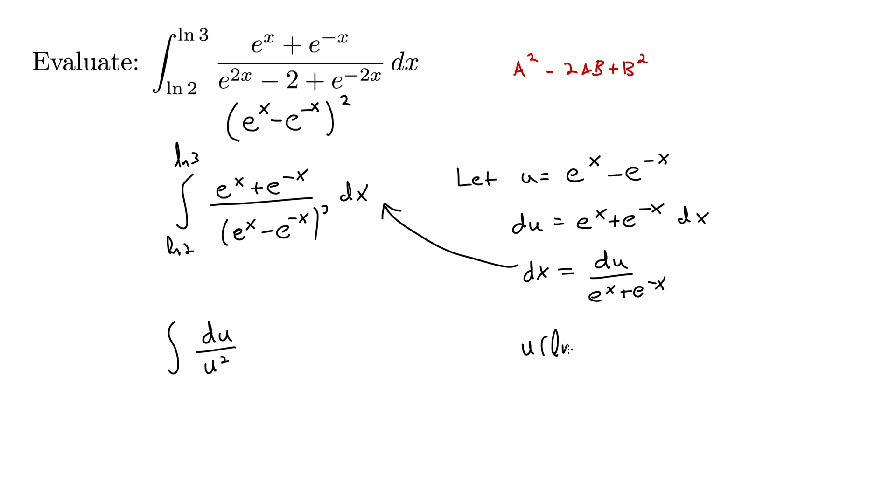So u of natural log of 2. So I'm plugging natural log of 2 in up here into u. We're treating u like a function of x essentially. So that's e to the natural log of 2 minus e to the negative natural log of 2.